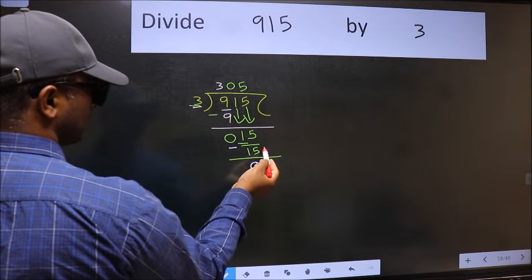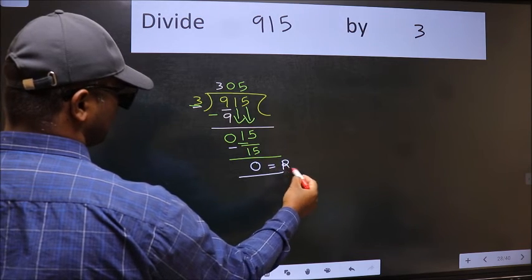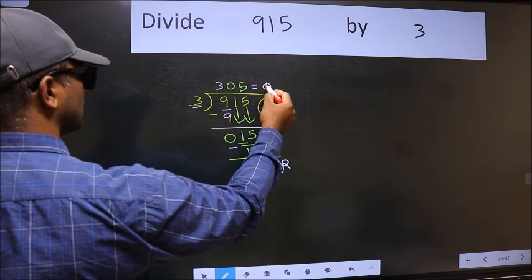No more numbers to bring down. So we stop here. This is our remainder and this is our quotient.